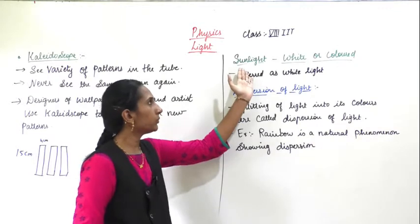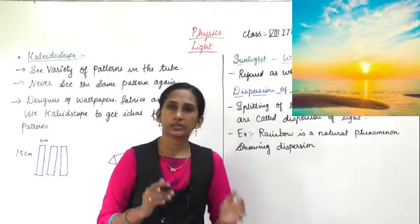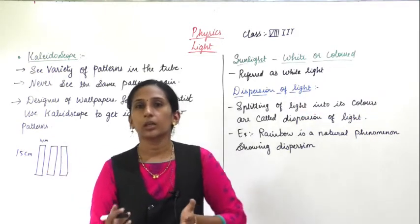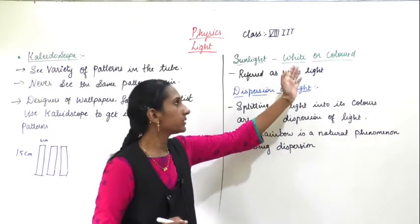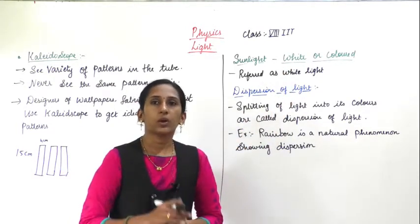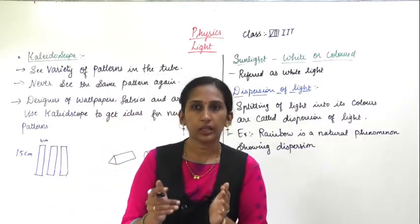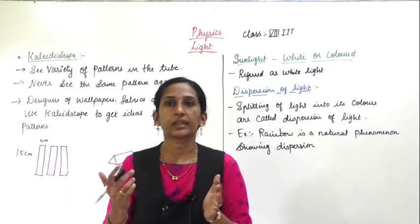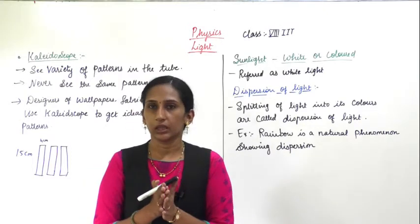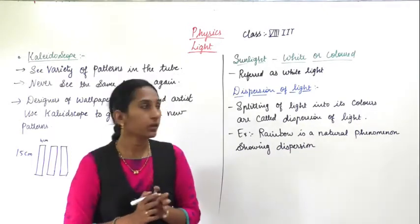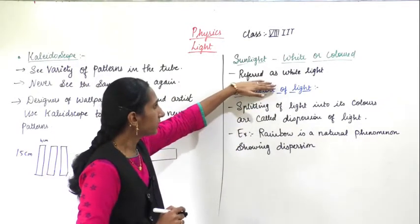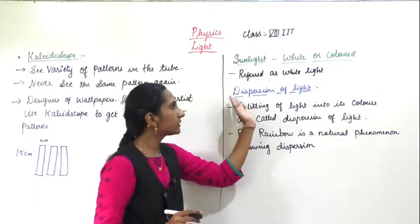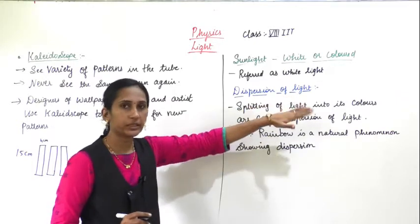Now we are going to see our main topic: is sunlight white or colored? Sunlight looks white in color, but why is it also called colored? Because the white light of the sun consists of seven colors. When you see it disperse, you can see the seven colors present in the white light. Sunlight is referred to as white light, and you will see the seven colors when there is a splitting of light.